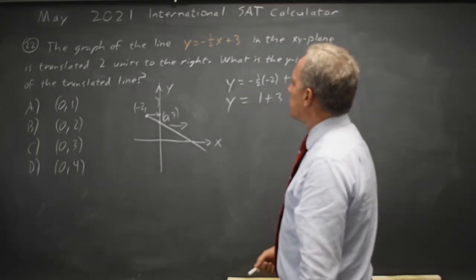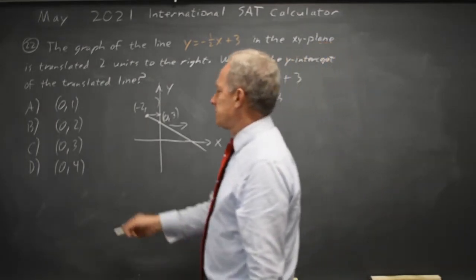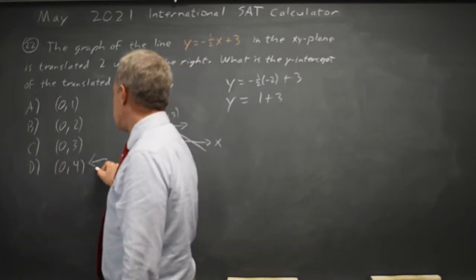The y value is 4, and of course the y-intercept has an x of 0, so it's 0, 4. The choice is d.